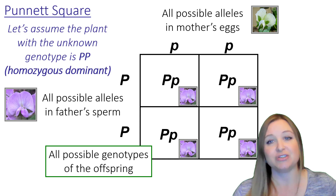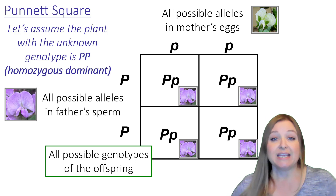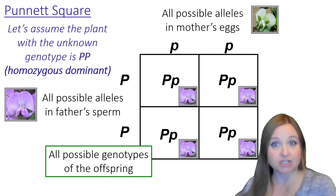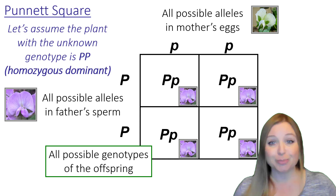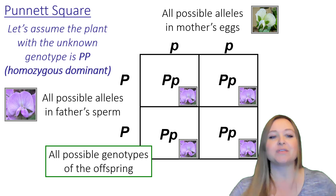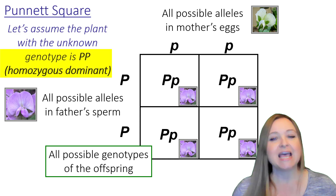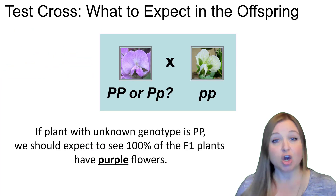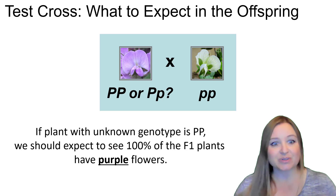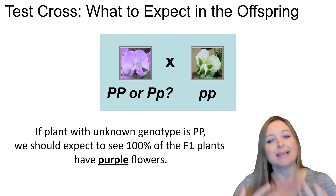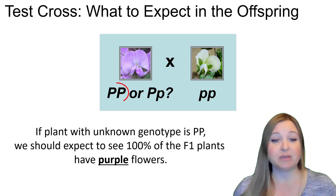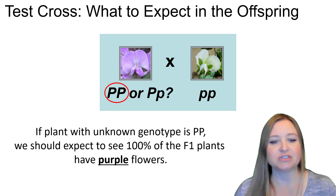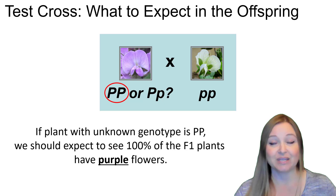So if we do our cross with the actual plants and find that the entire F1 generation is purple, then we know the father must have been homozygous dominant with two dominant purple alleles. When we do our cross in real life, if that plant with the unknown genotype is big P, big P, then all of the next generation's flowers should be purple.